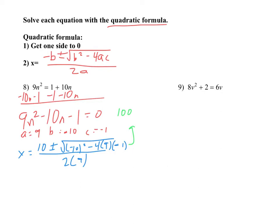Now we simplify inside the radical first. Negative 10 squared is 100, and it's positive 100 — anytime you square a positive or negative number it comes out positive. Then negative 4 times 9 is negative 36, times negative 1 is actually positive 36. So all of this becomes 10 plus or minus the square root of 136, all over 2 times 9, which is 18.